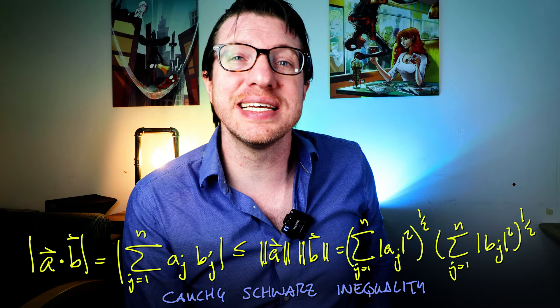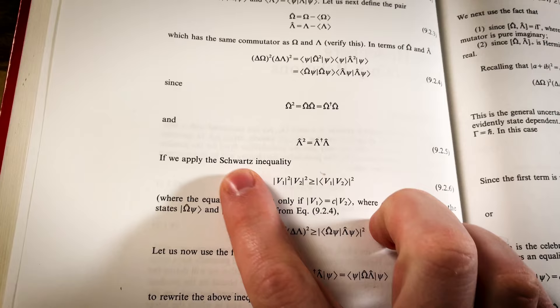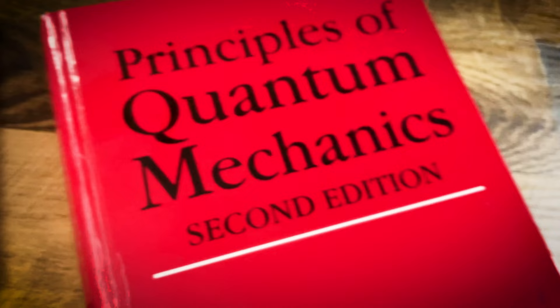The Cauchy-Schwarz inequality is essential for the proof of things like the Heisenberg uncertainty principle from quantum mechanics. It is also used in imaging and image registration through normalized cross-correlation, and I'll show you an example of that later on.